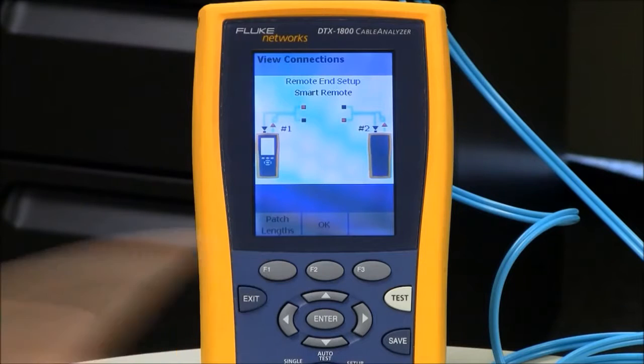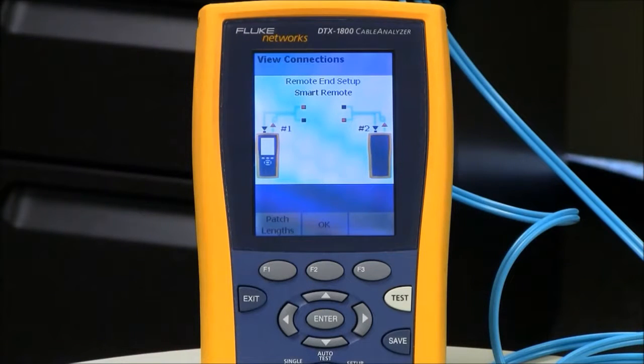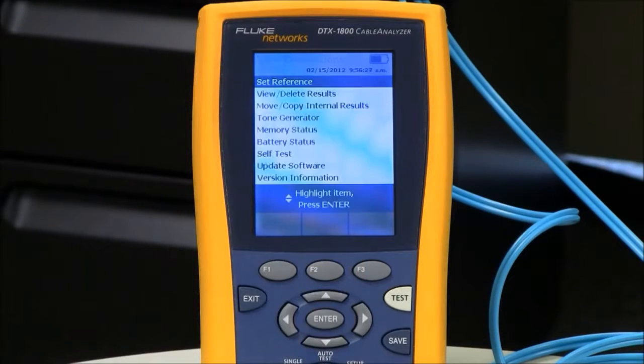I have the option here of putting the length of the cords that I'm using for testing today. That's not going to affect the outcome of the test result, but it will show up in your linkware report on your PC. So I'm going to press F2 OK.